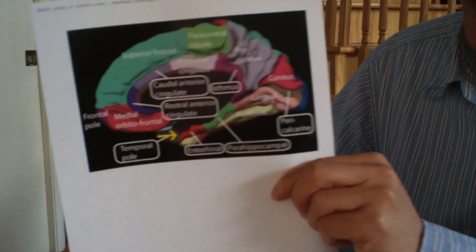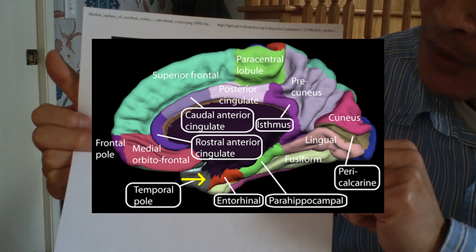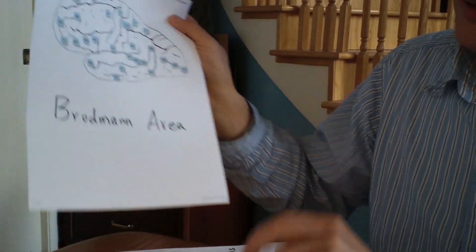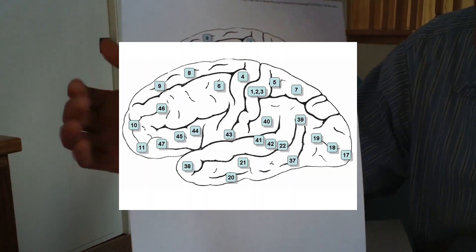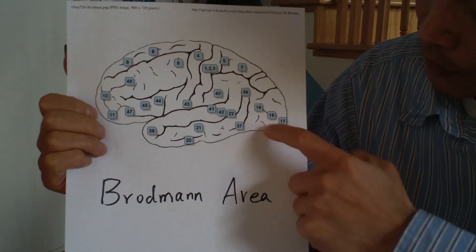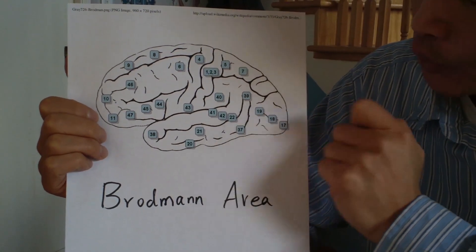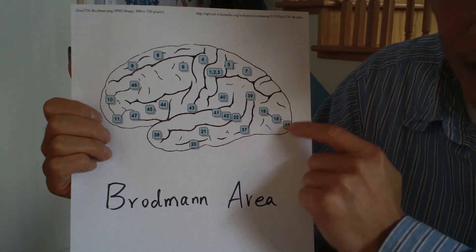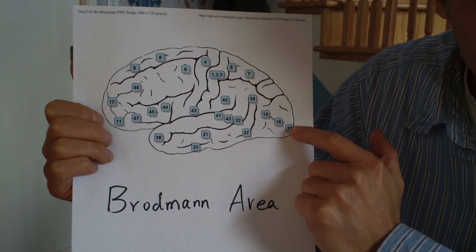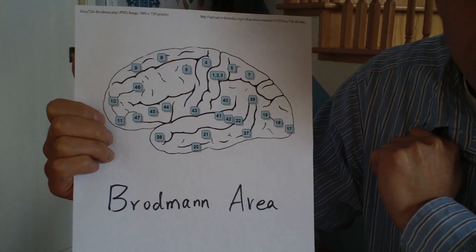Subdivisions are more detailed. This is a representation of a subdivision. There's another representation used in scientific papers called a Brodmann area. For example, this is a diagram of a Brodmann area. Remember the visual cortex — this area — instead of referring to it as the visual cortex, we call it Brodmann area 17. That's another way to represent a physical region of the brain.